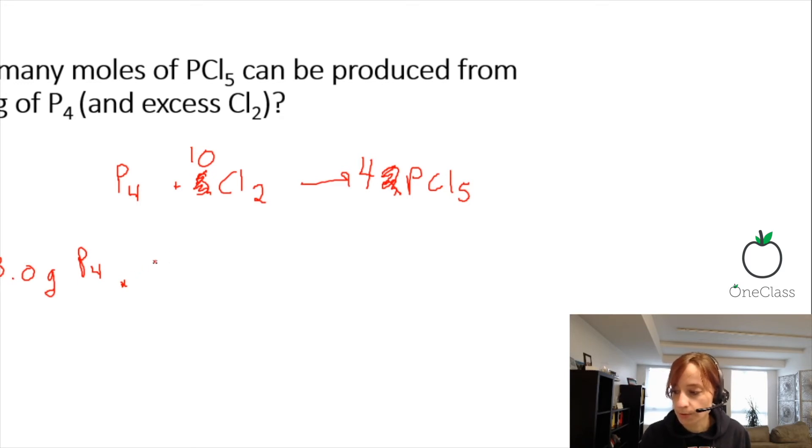The molar mass of one phosphorus atom is 30.97. But we have 4, so we'll just need to quickly multiply 30.97 grams by 4. So now our grams cancel out and we are given moles.